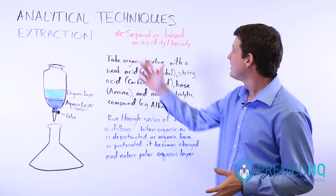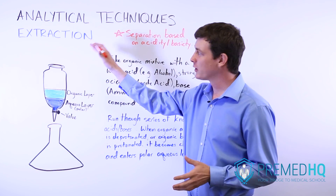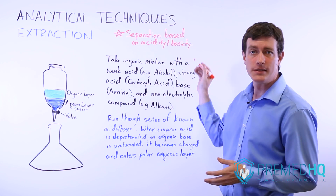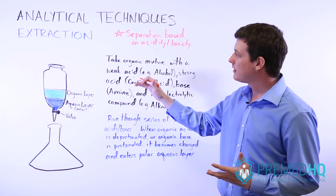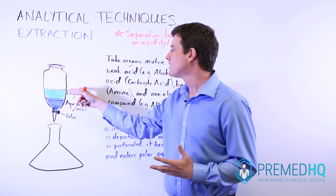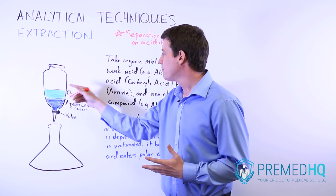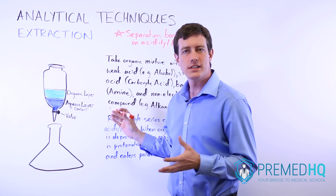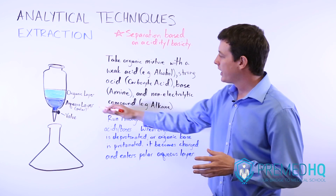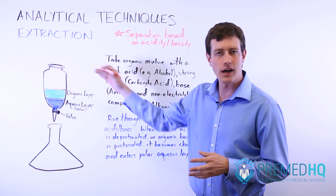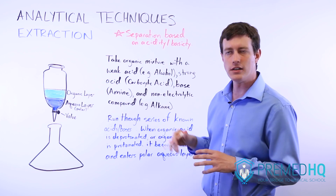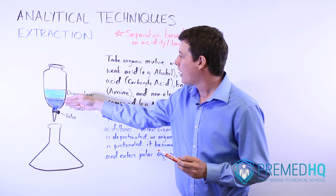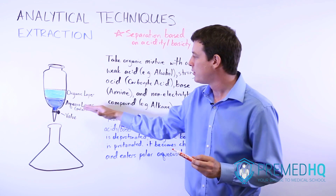Organic extraction is the analytical technique that separates organic compounds based on their acidity or basicity. The way it works is based on the fact that if you put organic compounds or an organic mixture along with some aqueous or water-containing compound, the organic layer will always rise to the top. Remember that oil floats on water, so your organic compounds will rise to the top and you'll have an aqueous layer underneath that is rather polar.